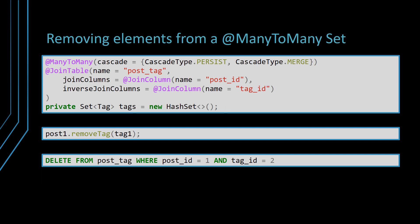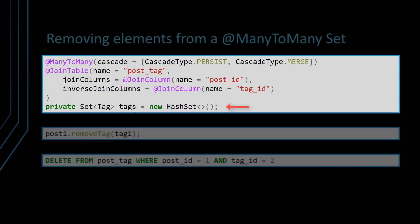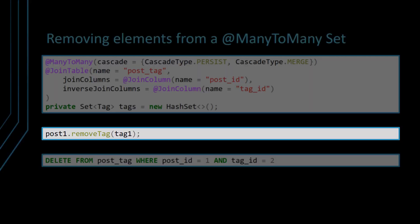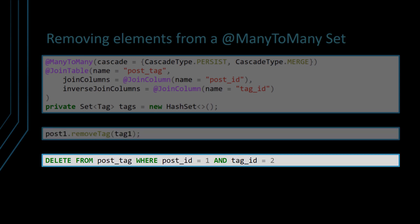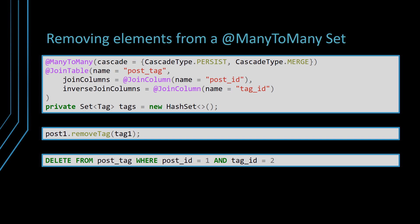On the other hand, if we use the java.util.Set and remove the tag entity from the tags collection in the post entity, Hibernate is going to issue a single delete statement. So, for a many-to-many JPA association, sets are a much better alternative to lists.